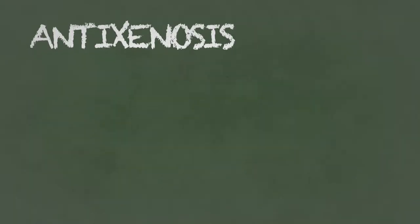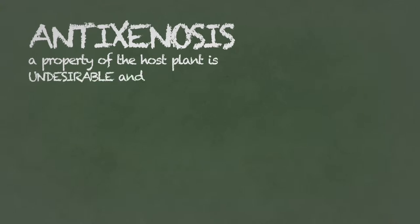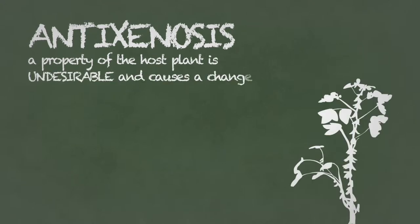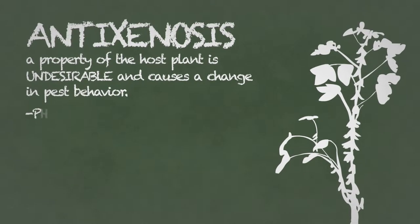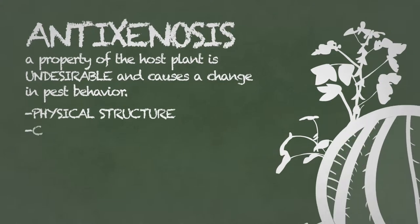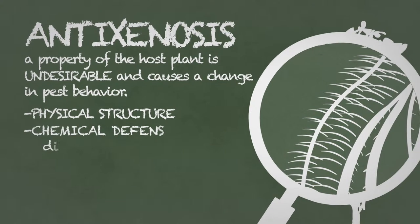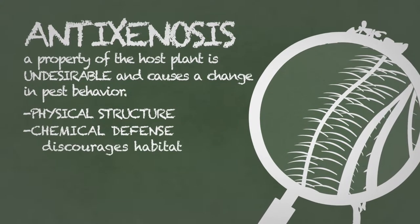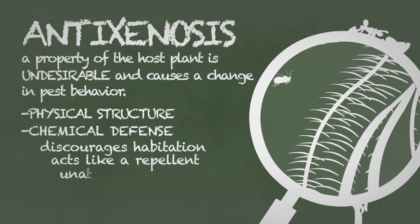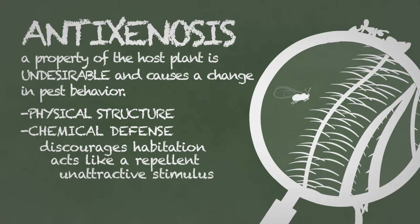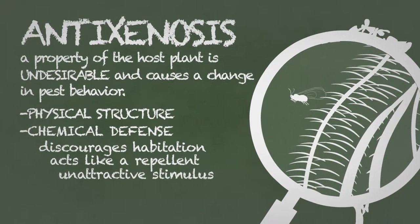Anti-xenosis: this means a property of the host plant is undesirable and causes a change in pest behavior. This could be through a physical structure or chemical defense that discourages habitation, acts like a repellent, or causes a plant not to produce a stimulus typically attractive to a pest.